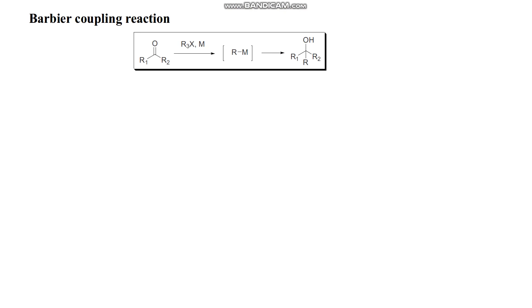Good morning everybody. Today I'm going to talk about different types of cross-coupling reactions. The first example is the Barbier coupling reaction, which is between alkyl compounds with carbonyl compounds such as aldehydes or ketones in the presence of a metal, for example magnesium, aluminium, zinc, or indium. This will afford alcohol compounds.